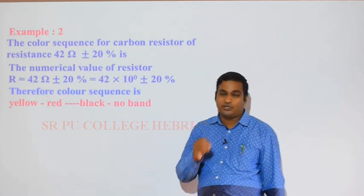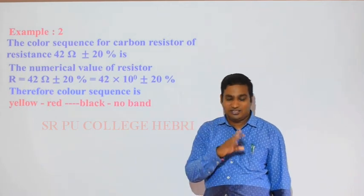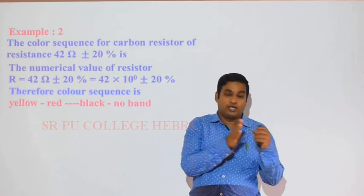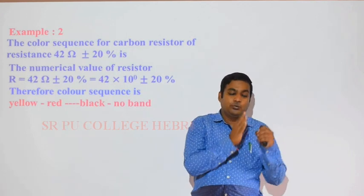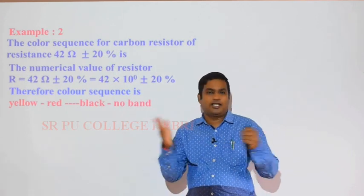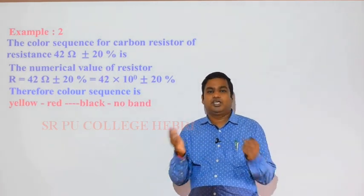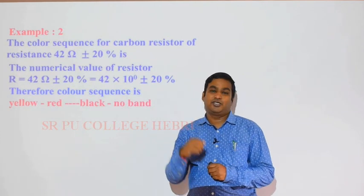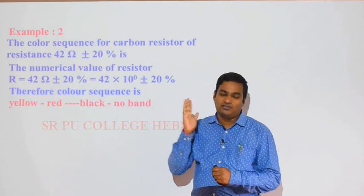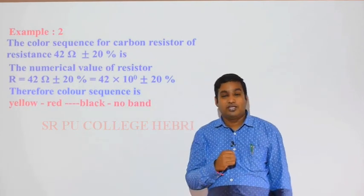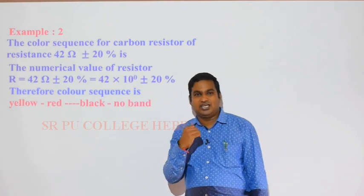Try to practice these problems. There are two types: given color bands, find the numerical value; or given the numerical value, find the color band sequence. You can easily get the answer using the color code of resistors. Remaining topics will be discussed in the next class.